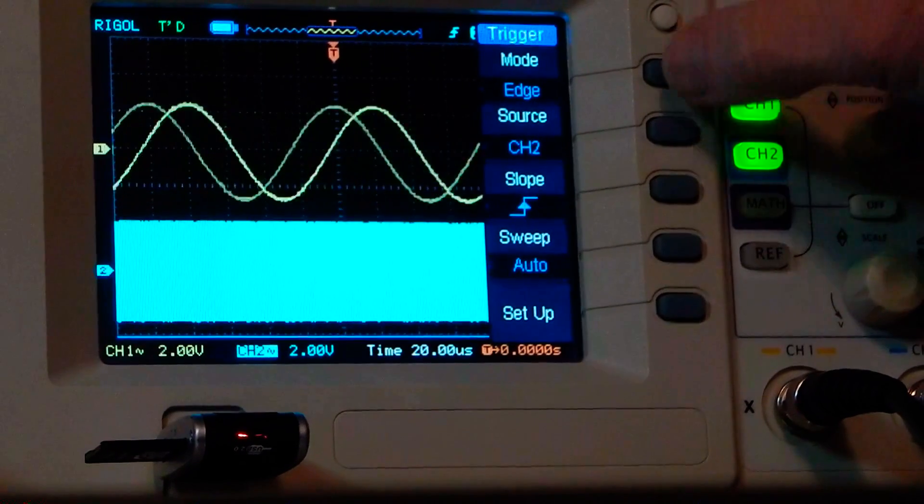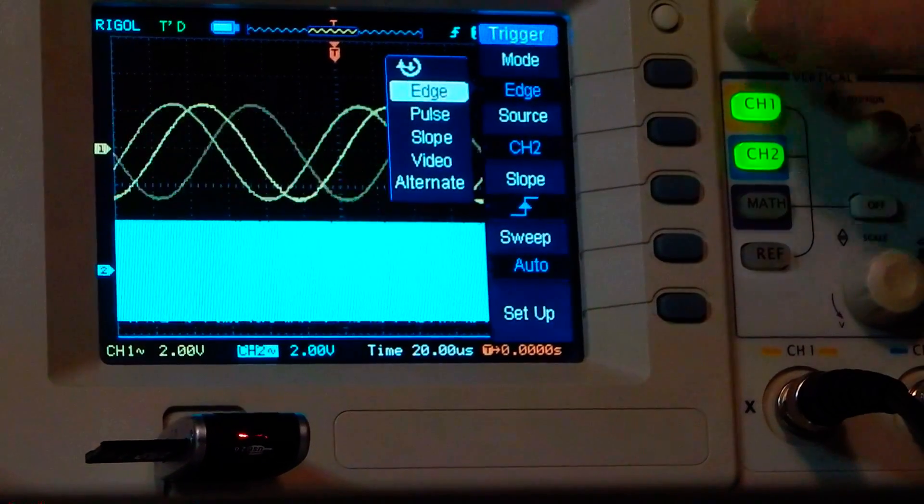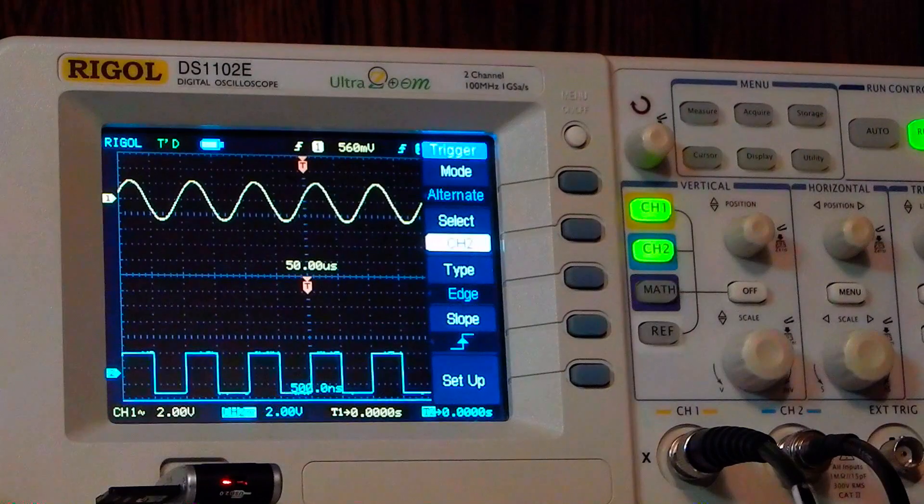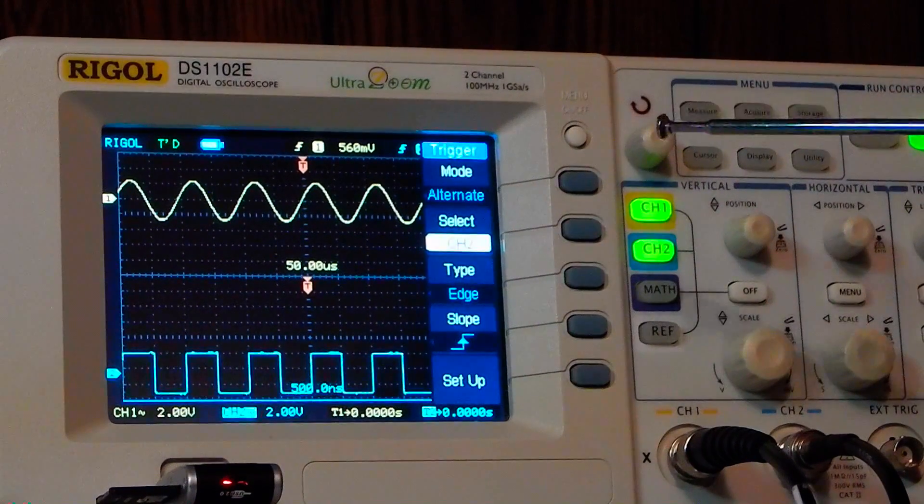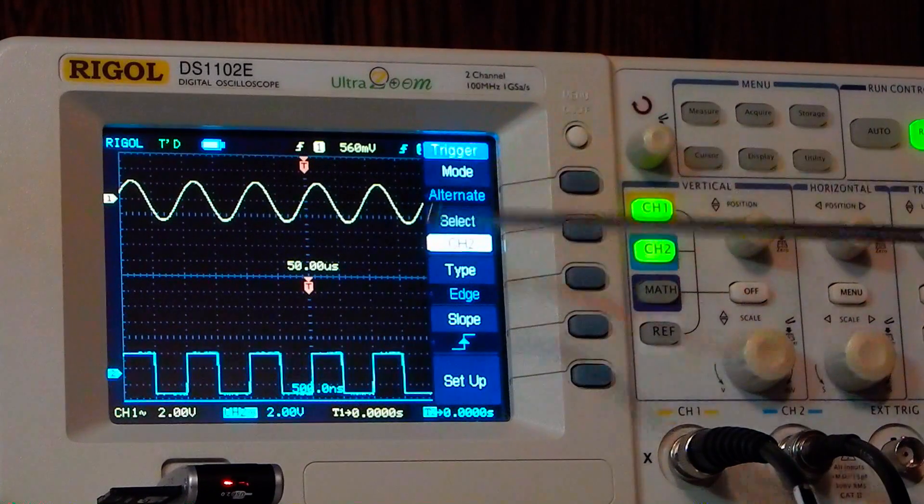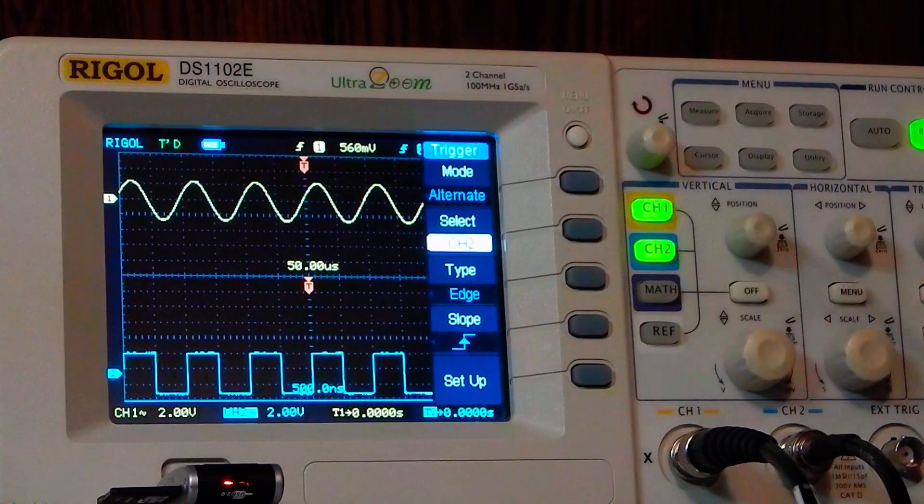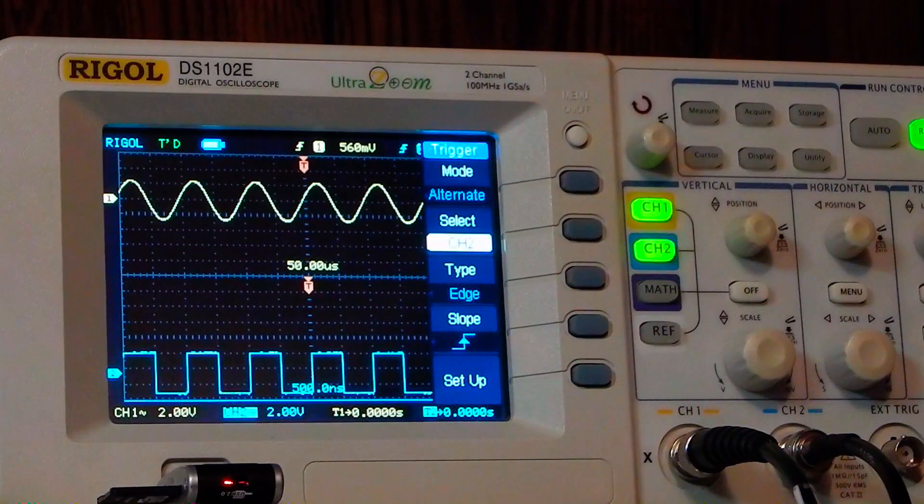...which is off the trigger menu - edge, pulse, slope, or video - if you move it down to alternate, what that allows you to do is control the vertical amplitude of both waveforms independently and the triggering levels.